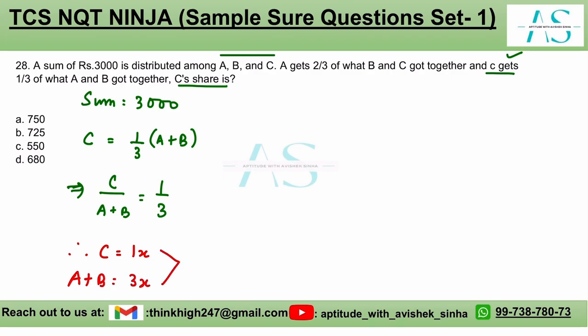And in total, this is reflecting to A plus B plus C's share, which is three X plus one X, which is nothing but four X and A plus B plus C's share is actually the sum. And what is our sum? It is 3000. So can we say four X is equivalent to 3000.